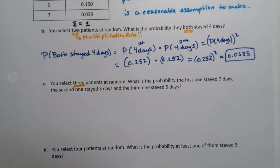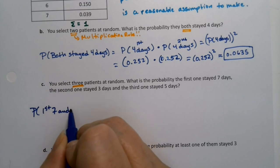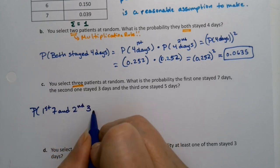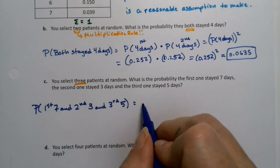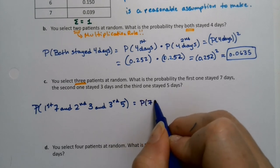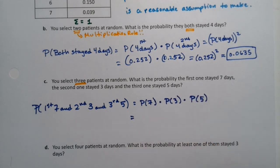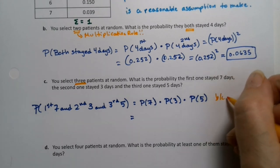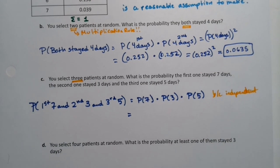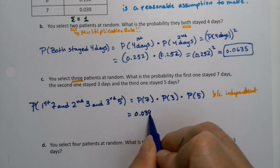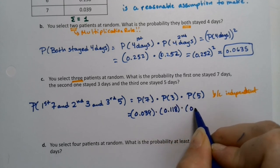Okay. So we want the probability that the first one stayed seven days and the second one stayed three days and the third one stayed five days. So it sounds more difficult than it actually is because what you do is you take the probability of seven days times the probability of three days times the probability of five days, because you assume independence. Since we assumed they were independent, you just multiply them. So 0.039 is the probability of seven. The probability of three is 0.118. And the probability of five is 0.441.